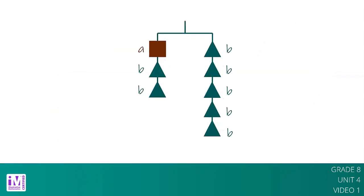Now consider this balanced hanger. On the left side, there is one square represented by A and two triangles, represented by 2b. On the right side, there are five triangles, represented by 5b. Because the hanger is balanced, we know the two sides are equal in value, so the hanger can be represented by the equation A plus 2b equals 5b.